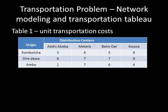The origins are Kombolcha, Dire Dawa, and Ambo. The distribution centers are Addis Ababa, Mekele, Bahir Dar, and Assosa. Unit transportation costs: from Kombolcha to Addis Ababa is 3, to Mekele is 4, to Bahir Dar is 5, and to Assosa is 8. From Dire Dawa to Addis Ababa is 6, to Mekele is 7, and to Assosa is 8. From Ambo to Addis Ababa is 2, to Mekele is 7, to Bahir Dar is 6, and to Assosa is 6.